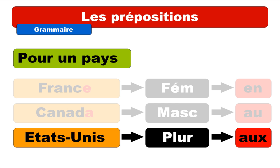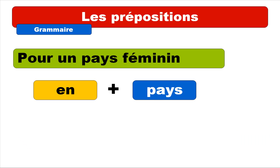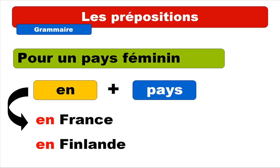Let's see how they work. Pour un pays féminin — as we saw — you will have to use la préposition EN, and then add the country right after. Some examples: En France, En Finlande.